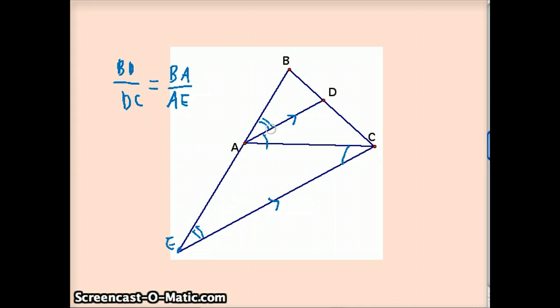But remember, AD was an angle bisector, so that means that these two angles are equal, so I could actually put the double arc here, and that makes this. So what that means is that this thing is an isosceles triangle. And we're left with what we were trying to prove, which is the angle bisector theorem says that BD over DC equals BA over AC.